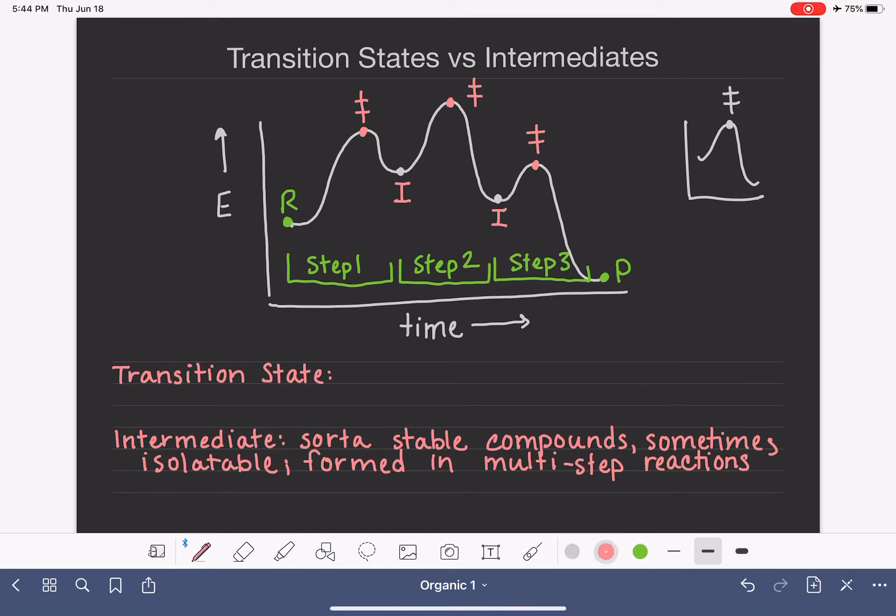Transition states are unstable. There is no question about their stability. They are definitely unstable. You cannot stop a reaction at the transition state. So you could not get the reaction to here, stop it, put it in a container, and save it for another day. Once you get to this part, it will instantly and automatically downhill itself to the intermediate or to the product, depending on where it is in the reaction.